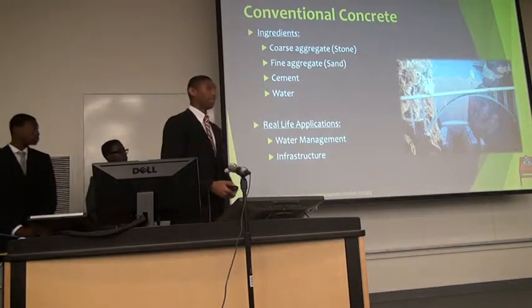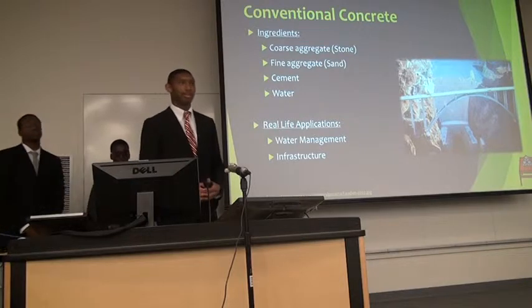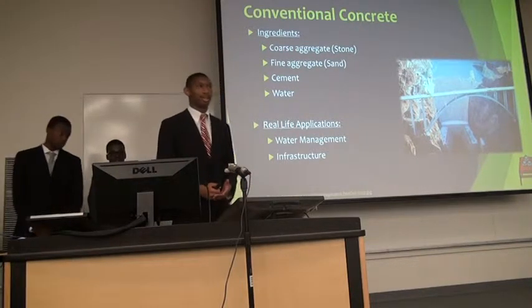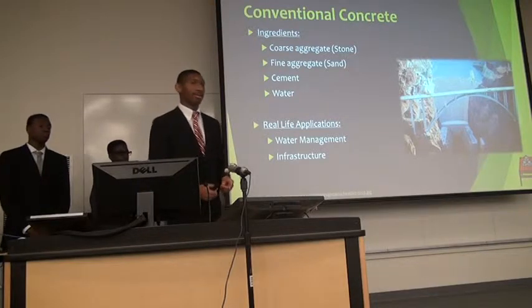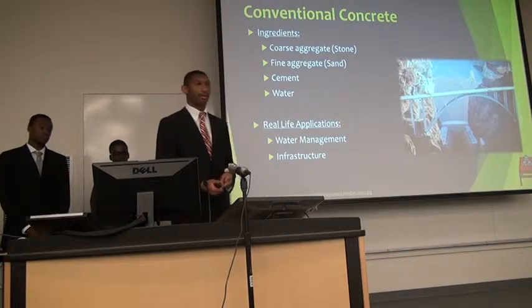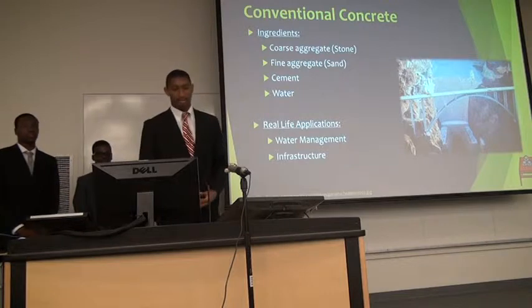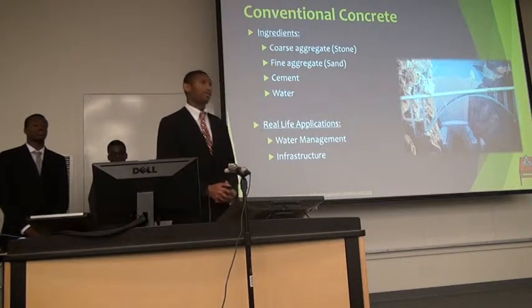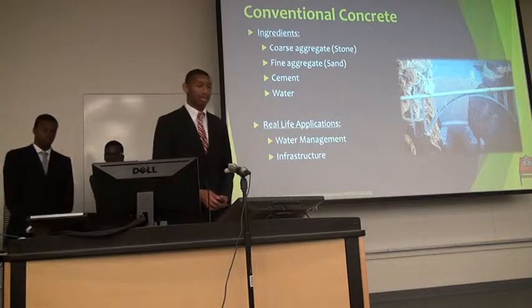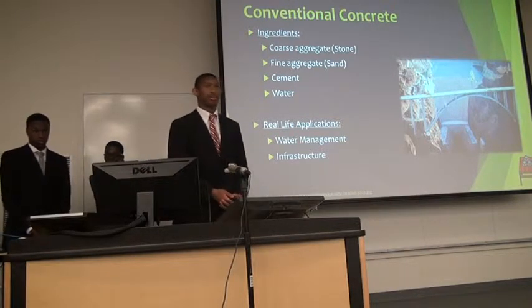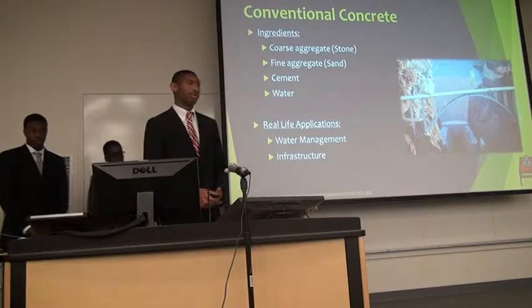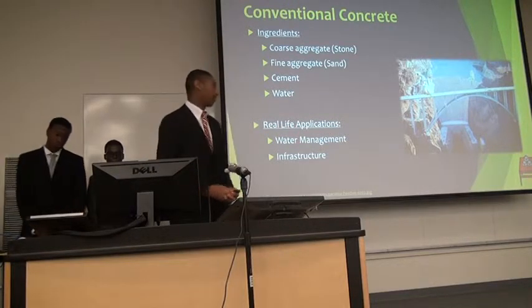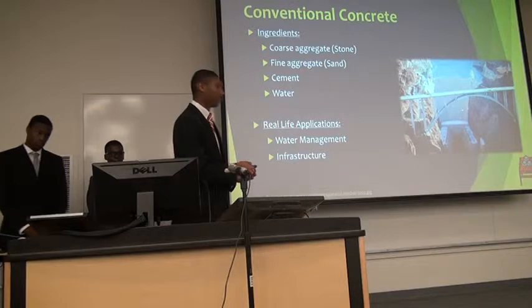The most commonly known and used form of concrete is conventional concrete. There are five main ingredients: coarse aggregate, fine aggregate, cement, water, and air. Coarse aggregate is stone and fine aggregate is sand. Real-life applications of conventional concrete include water management and infrastructure in buildings such as bridges, skyscrapers, and dams, such as the Hoover Dam.